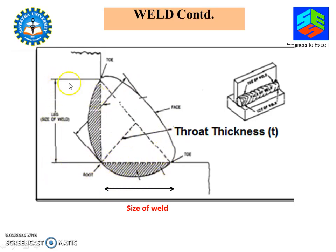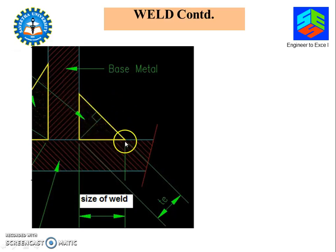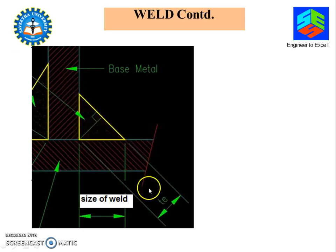This size and this size will be the same, so this is called the size of the weld — this distance and this distance. Automatically this will be 45 degrees, and this also will be 45 degrees. From this vertex or point, if I draw a line that makes 90 degrees with the hypotenuse, this is called the throat thickness. It is normally represented by small t. This yellow color shows a cross-section of a weld wherein I have removed the outer projections. This is your size of the weld, and this distance — making 90 degrees perpendicular to the hypotenuse — is the throat thickness, denoted by t.